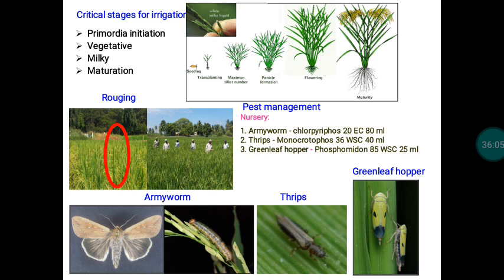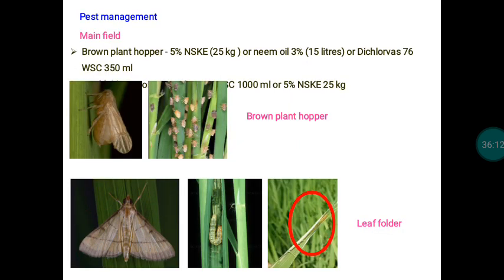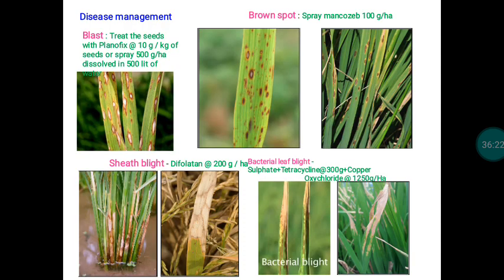Any off-types present in the field must be removed to ensure the genetic purity of the seed material. Roguing is a very important operation. Pest management is also very important; appropriate chemicals must be used to control major pests of paddy such as stem borer, thrips, leaf hopper, and leaf folder. Diseases like blast, brown spot, sheath blight, and bacterial leaf blight must also be controlled, otherwise the physiological and physical quality of the seeds will be affected.